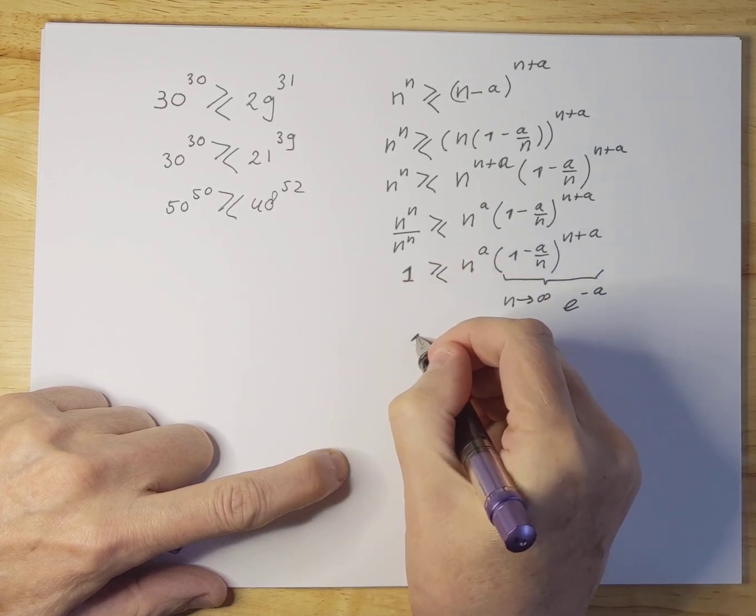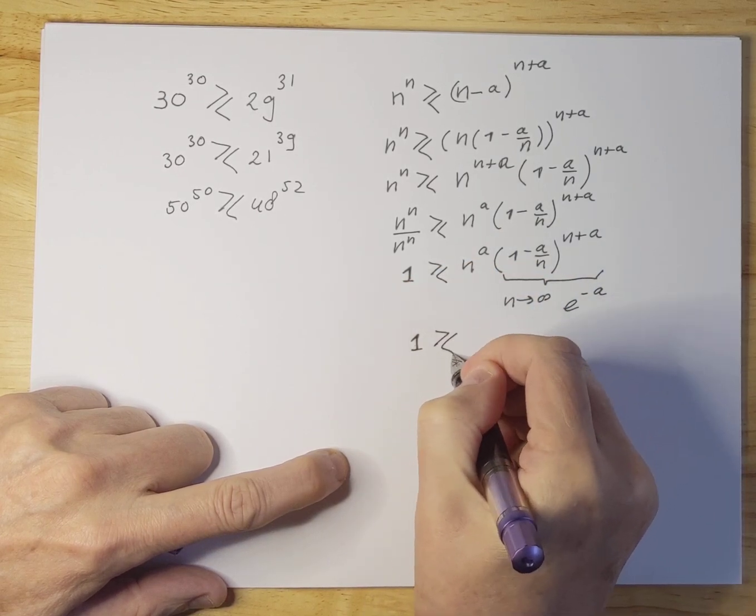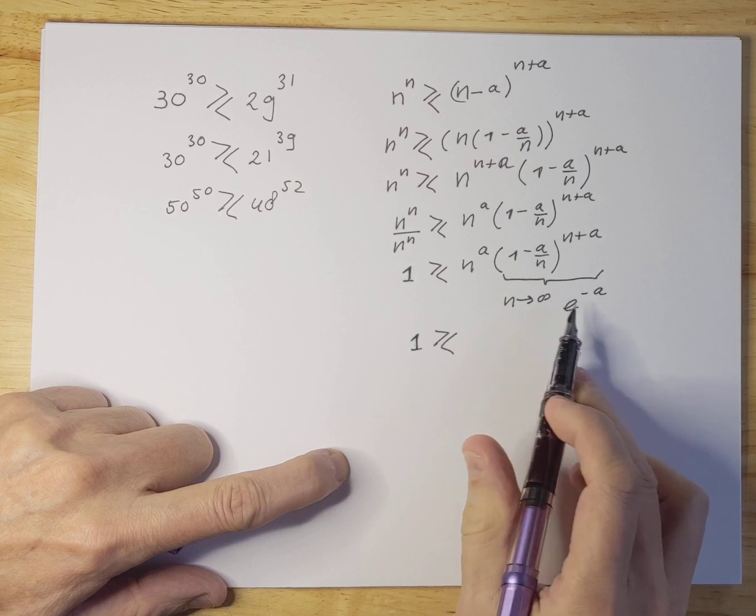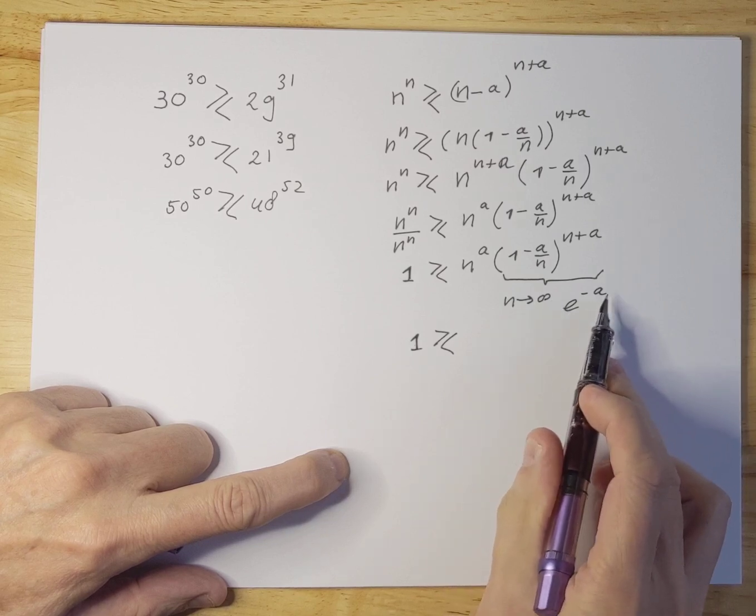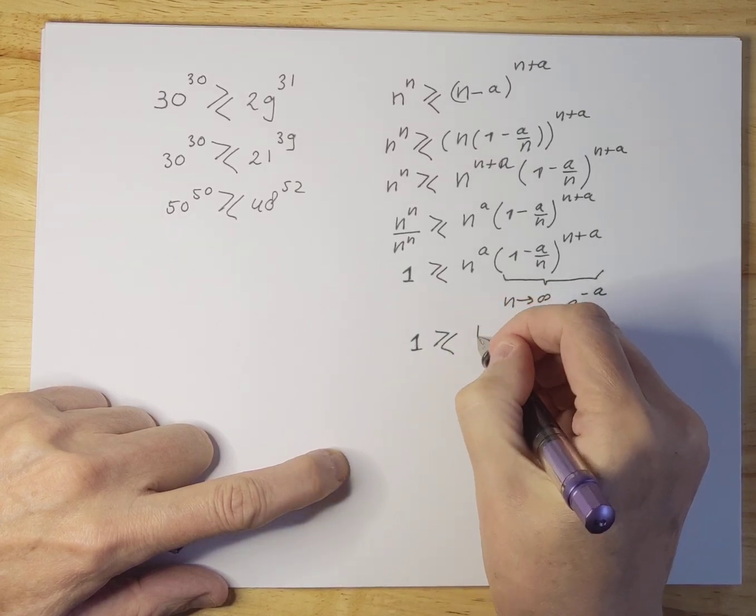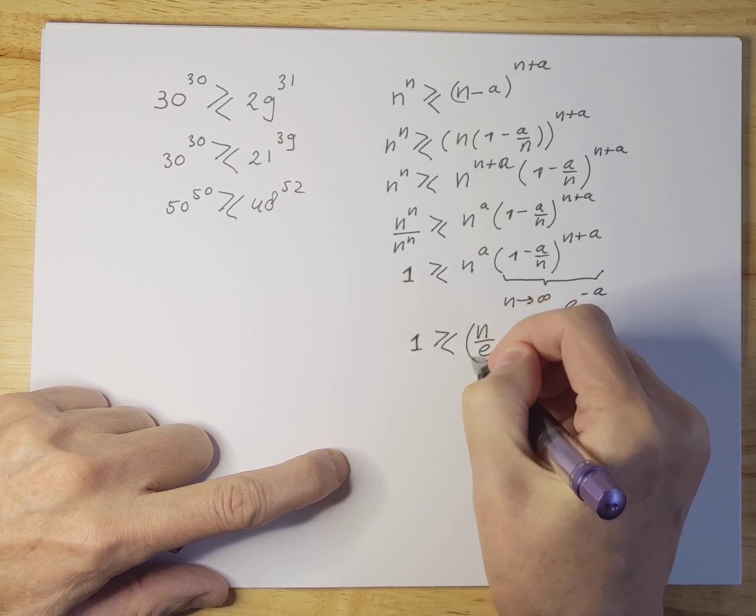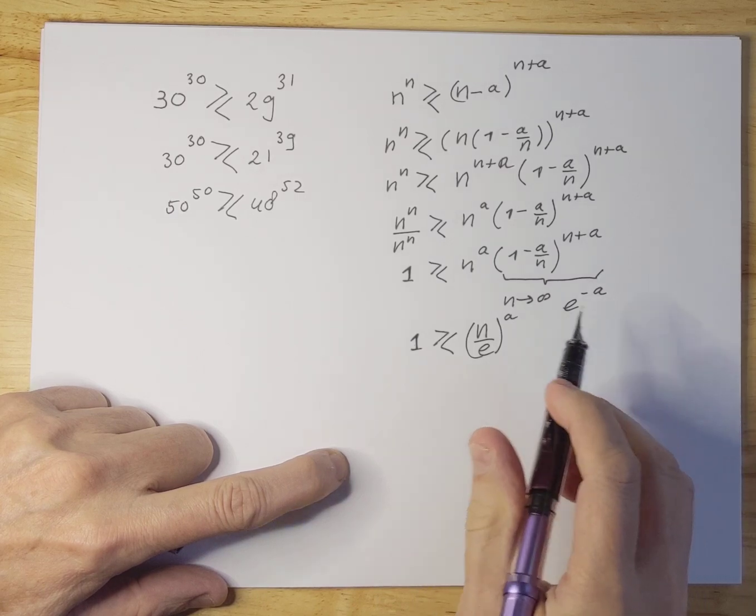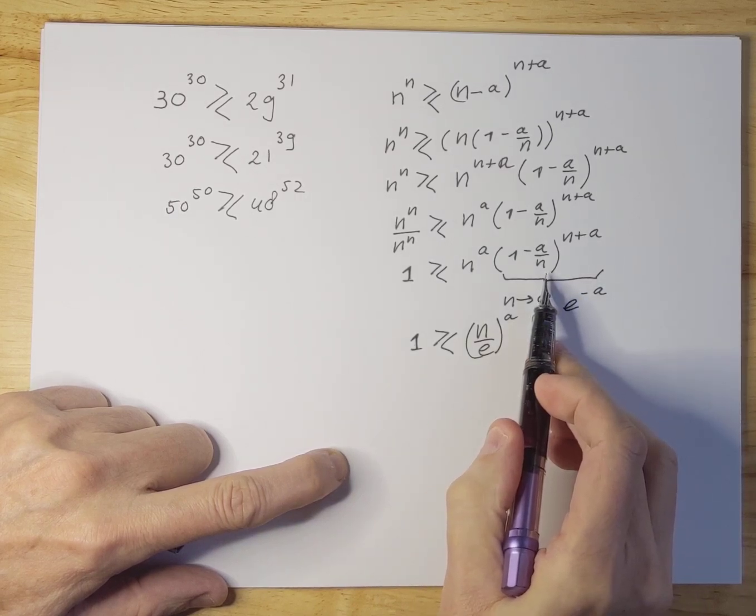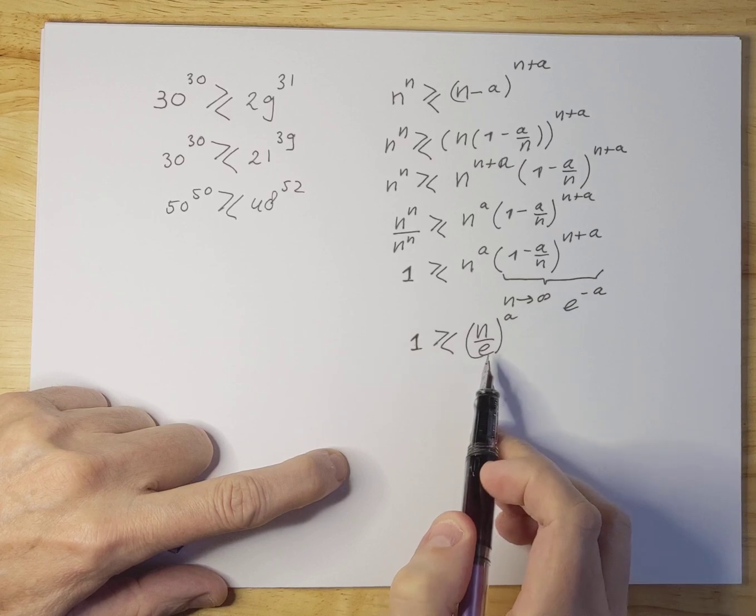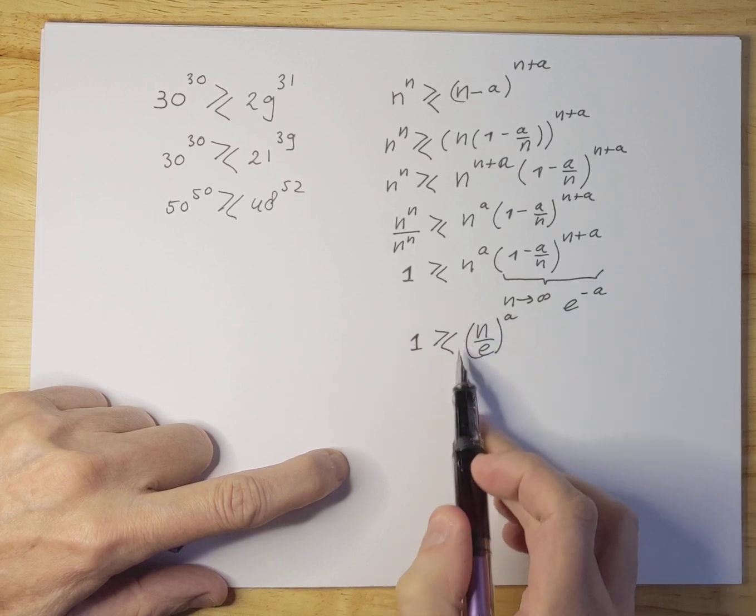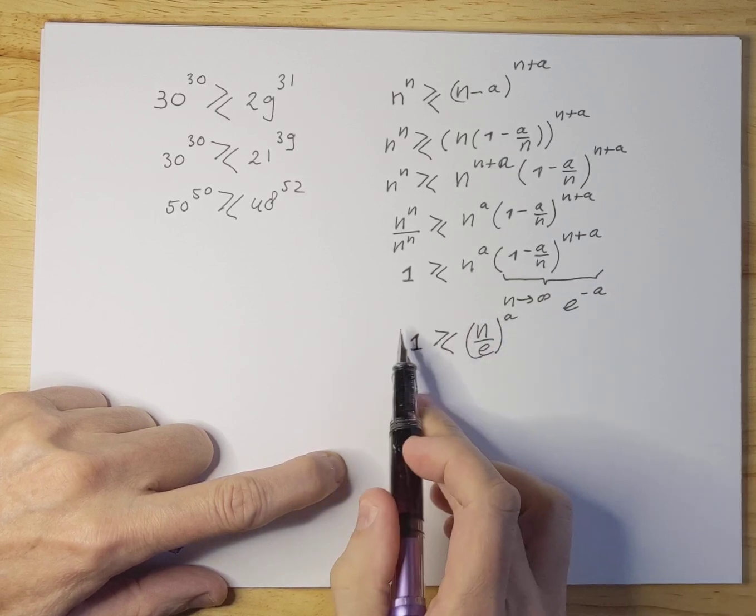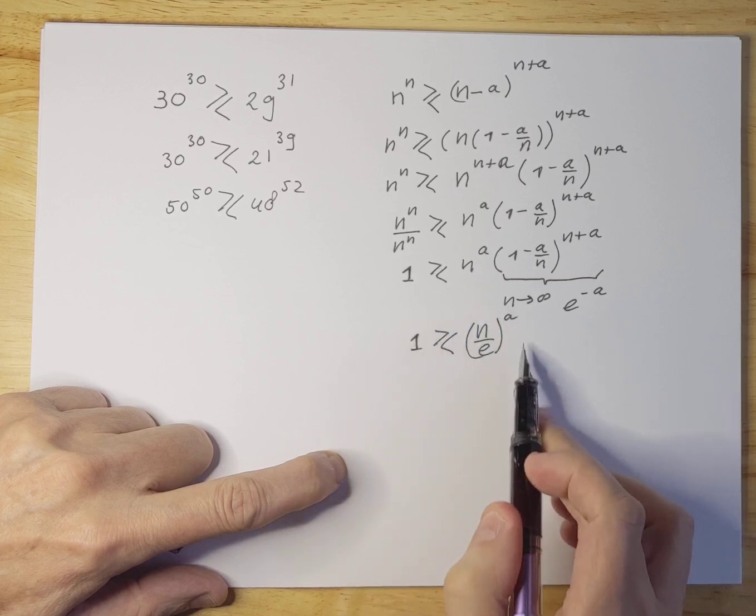So then we can rewrite this, and this by the way if n goes to infinity that's a worst case scenario. So if we substitute n to the e now like we do here, then this is really a worst case scenario because if n is smaller than infinity it will not reach e and as a consequence this number will be bigger anyways. So what you see here is really a worst case scenario.